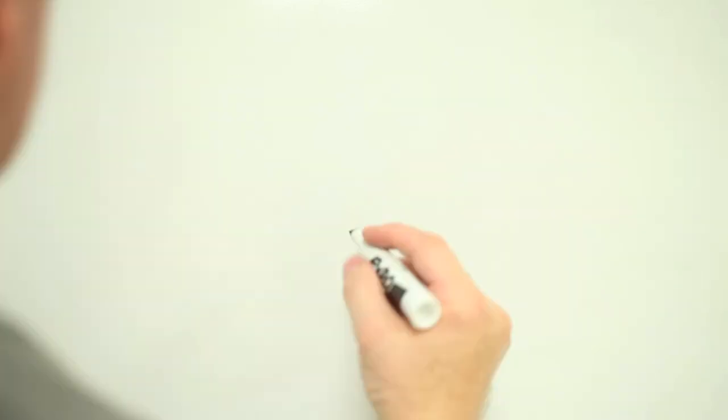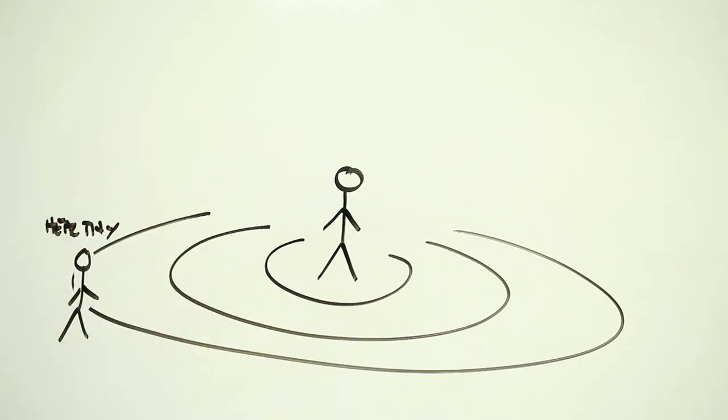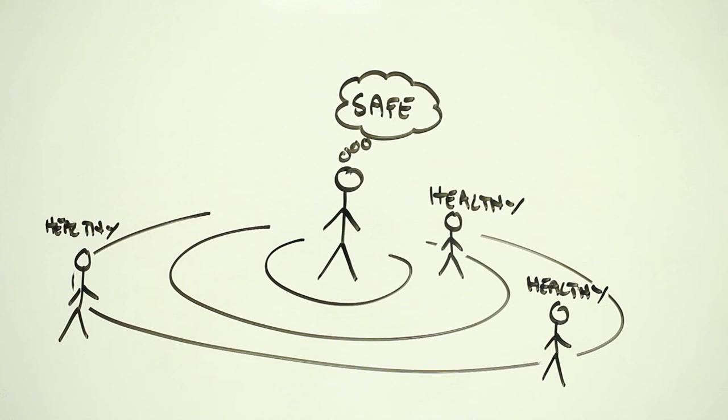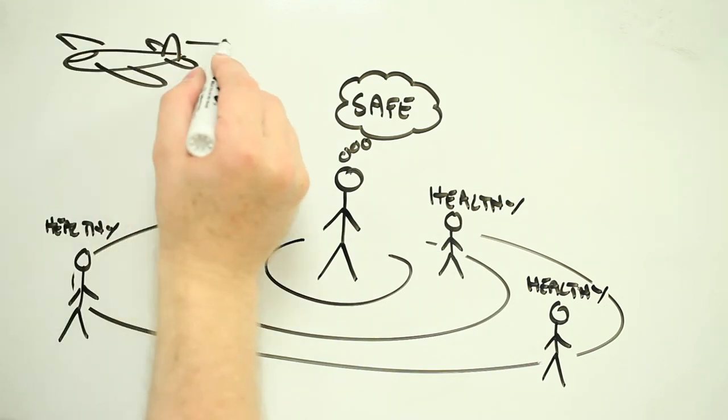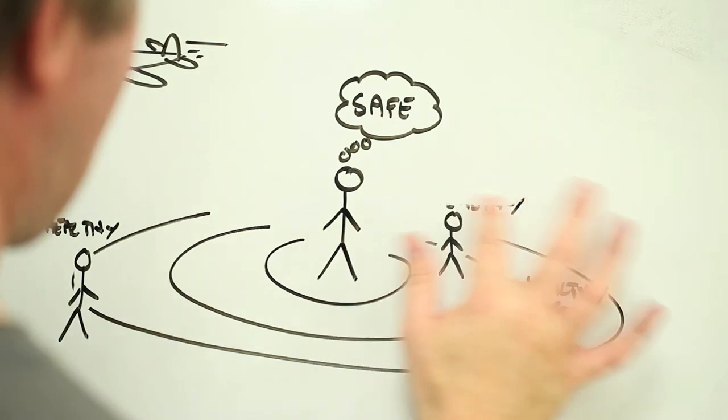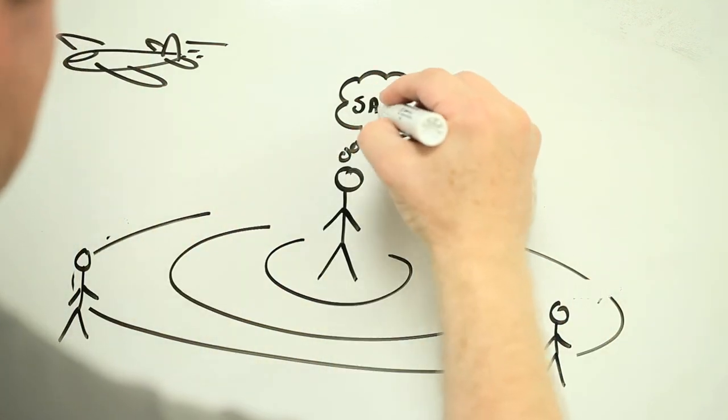The problem is, in the modern world, the threat of these diseases comes from people we don't know. We live in a world where sick people can take airplanes and cars and buses and bring distant diseases to our neighborhoods at any time. So, even though these diseases are rare, they remain a threat.